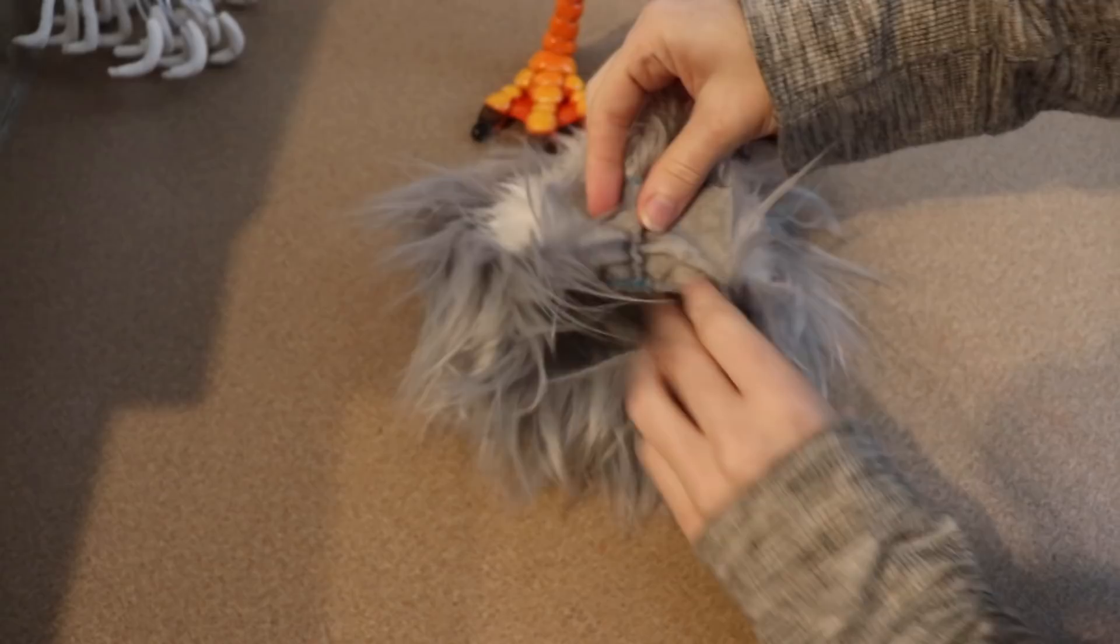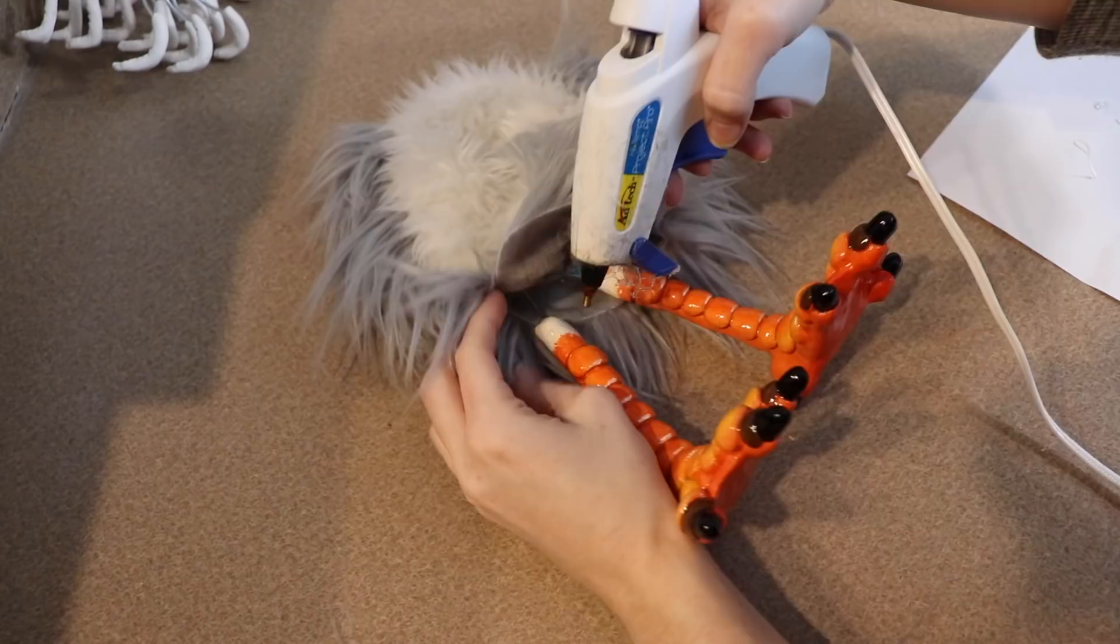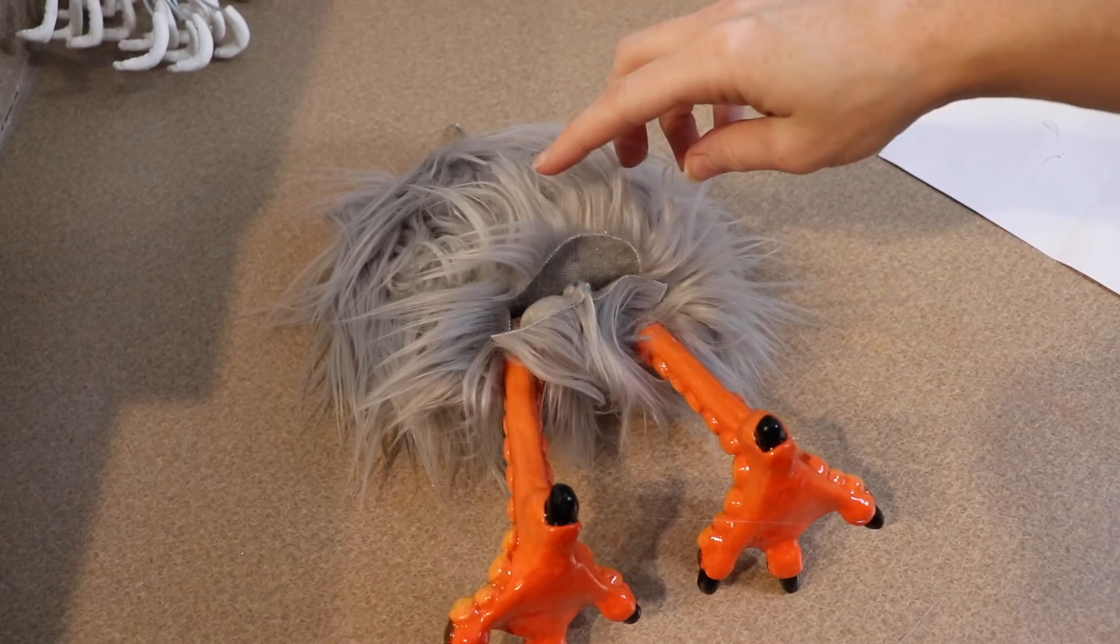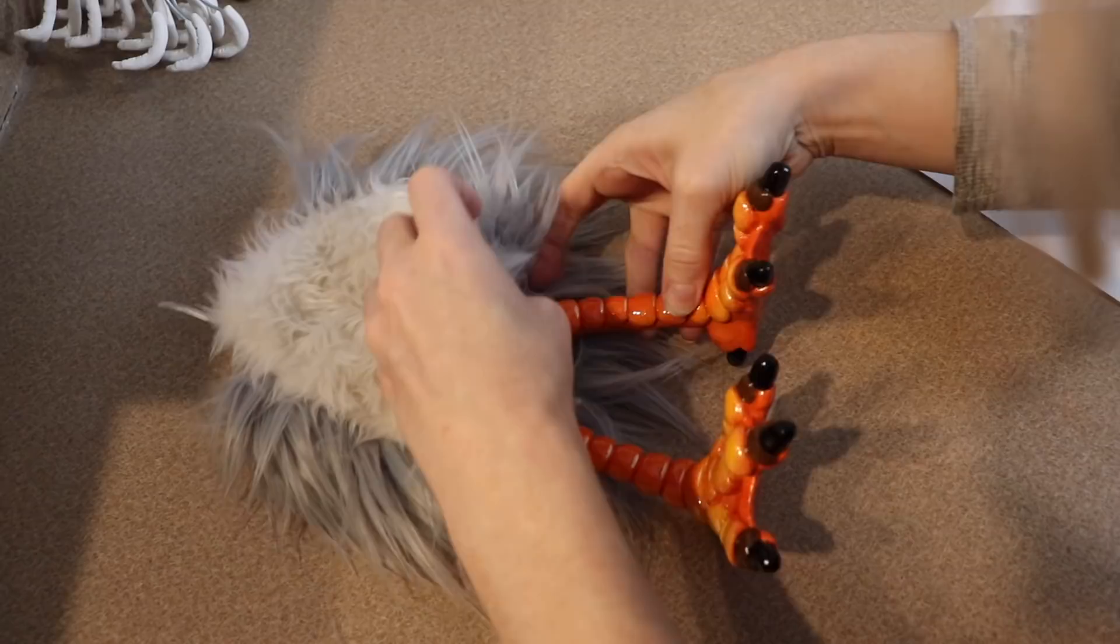I'm just going to run the wire up into the body and then we're going to take our hot glue gun and glue the fabric around the base of the legs. After our legs are glued into place, I'm going to take a needle and thread and I'm going to sew up the little flap in the back and then we're going to stuff the body.